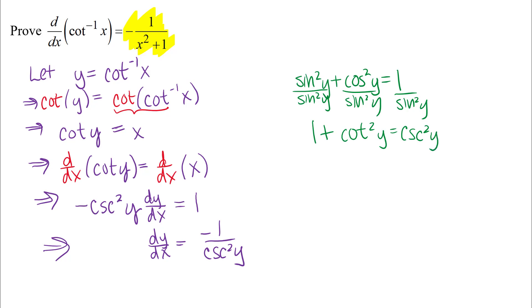And so then I can go back to what I had with my work in the proof here and replace the cosecant squared of y on the denominator with the pythagorean identity. All right, and then we're almost done here.